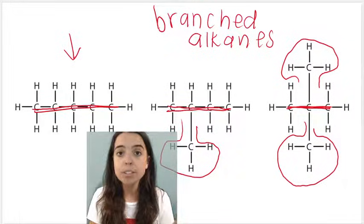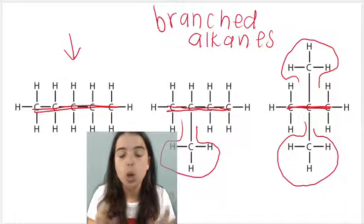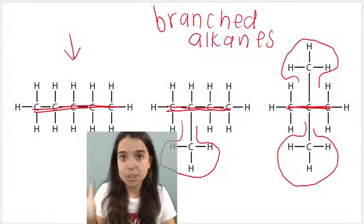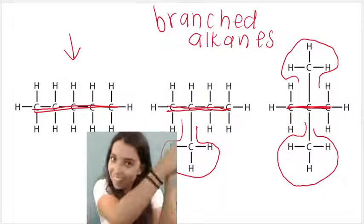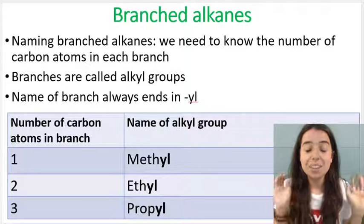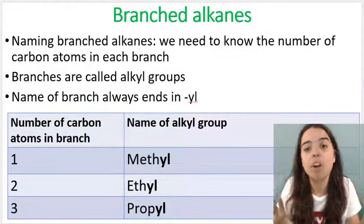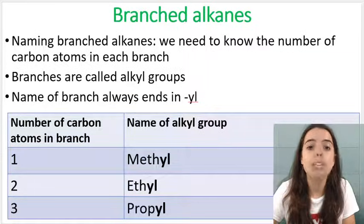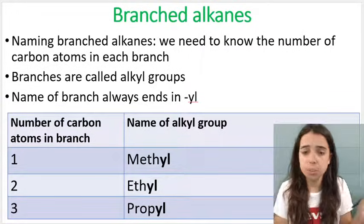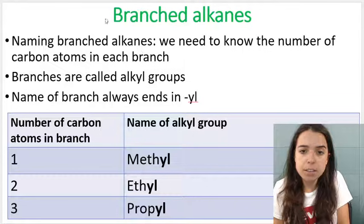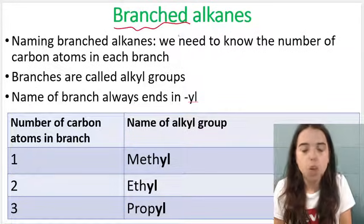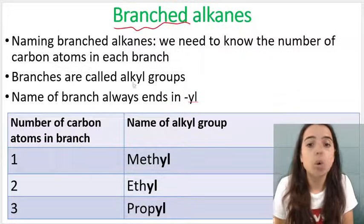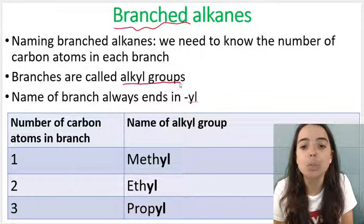In this video I'm going to show you how to name alkanes when they have branches or substituents. Now the first thing you need to understand about branched alkanes is that they'll have branches or substituents. If you see the word substituents, it's basically a fancy word for a branch. What we're going to be focusing on in this video are substituents that are called alkyl groups.